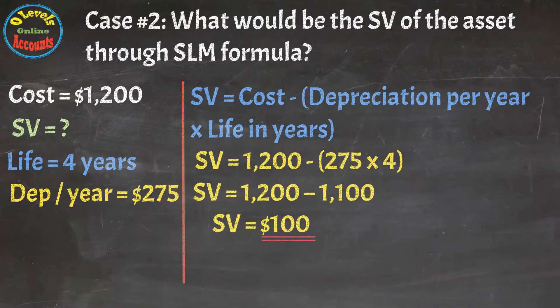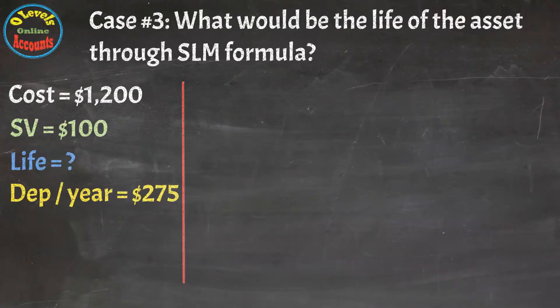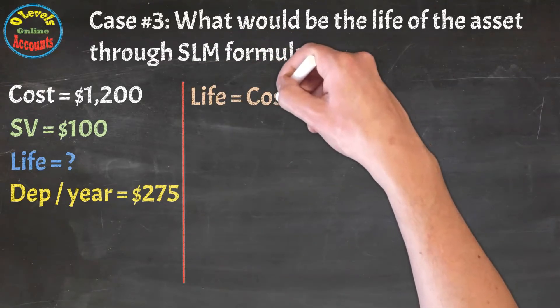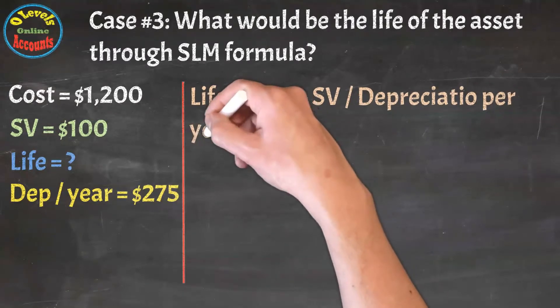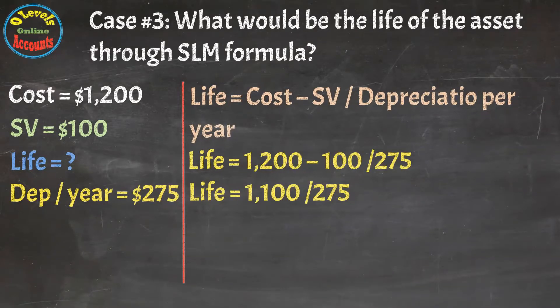Let's move towards the next case. In case number three, we will find the life of the asset through given data. In this case, we will change the formula settings to calculate the life of the asset. The new shape would be life equals cost minus scrap value divided by depreciation. By putting all corresponding values, we will get the life of the asset is four years.